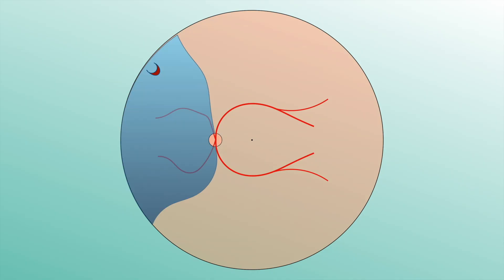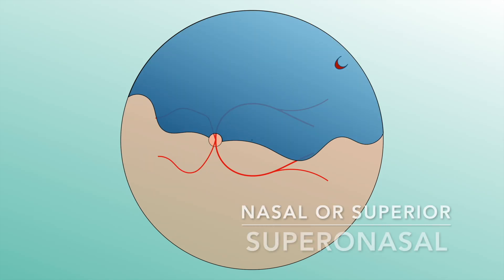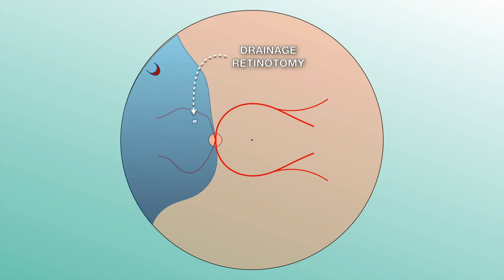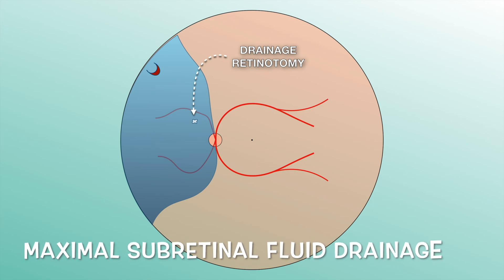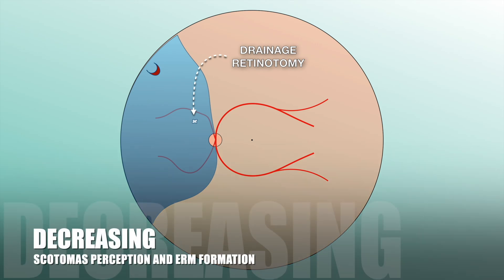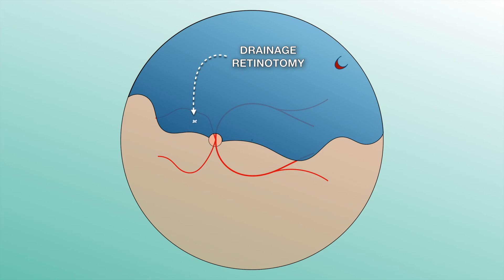In the case of nasal detachment as well as superior detachment, a superior nasal drainage retinotomy provides the best performance. Performing the retinotomy about three disc diameters away from the optic nerve allows for maximum subretinal fluid drainage, besides being away from the fovea, decreasing scotoma perception and sequelae from a possible epiretinal membrane formation.